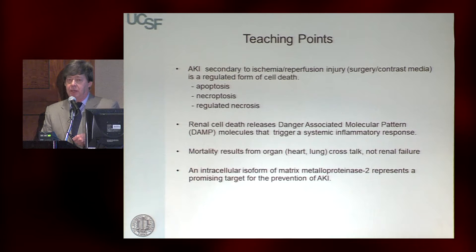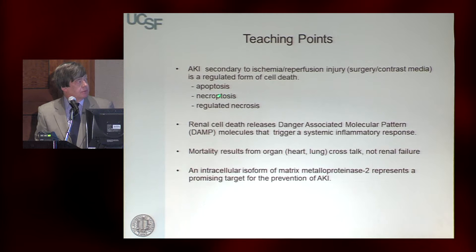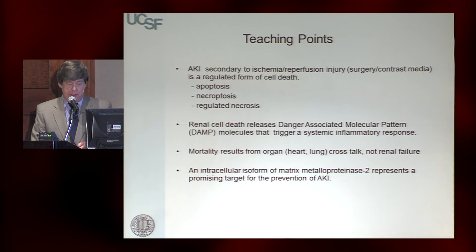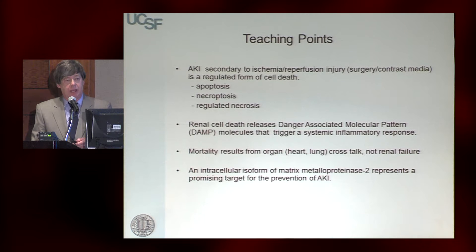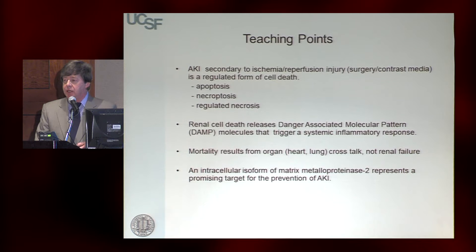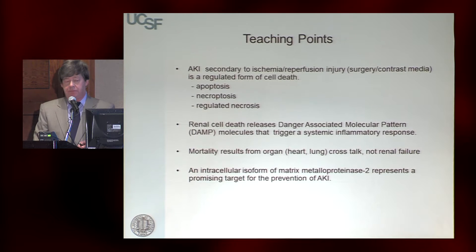These are different pathways that are activated in a setting of either ischemia reperfusion injury and/or sepsis. I'll talk about what the difference is between necroptosis and regulated necrosis because they have different metabolic pathways. AKI is a systemic disease, and renal cell death or necrosis releases what we call danger-associated molecular pattern molecules. These are recognized as non-self molecules by the innate immune system and trigger a primary innate immune response that leads to inflammation in distal organs, otherwise known as inflammatory organ crosstalk.